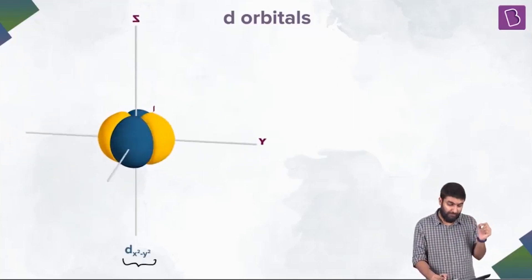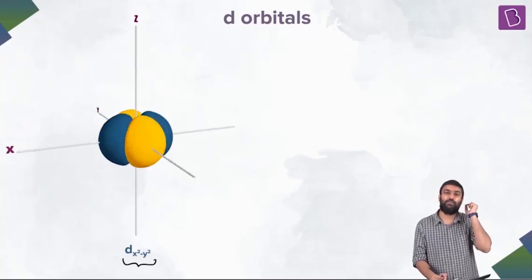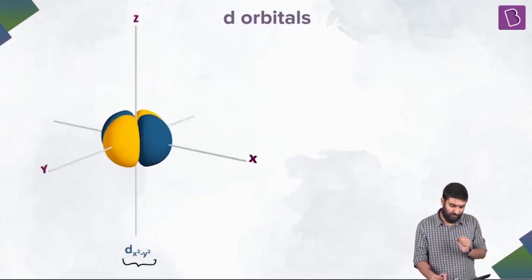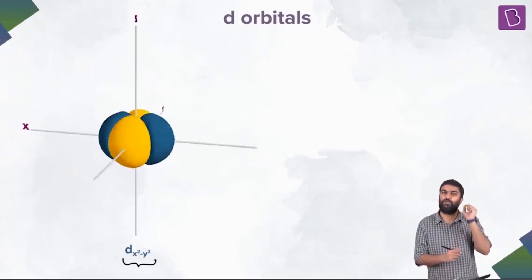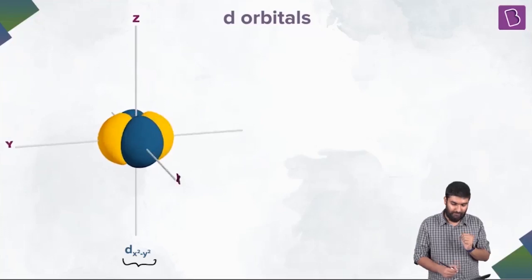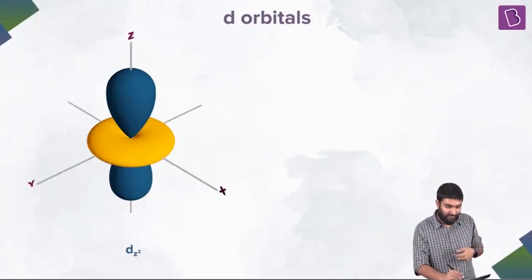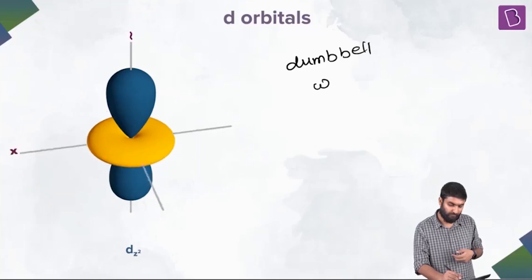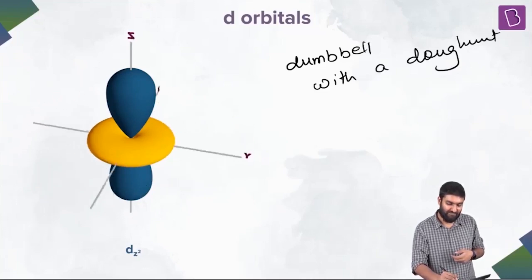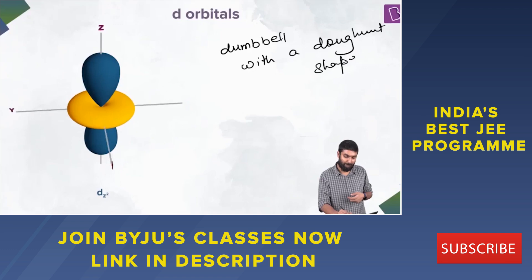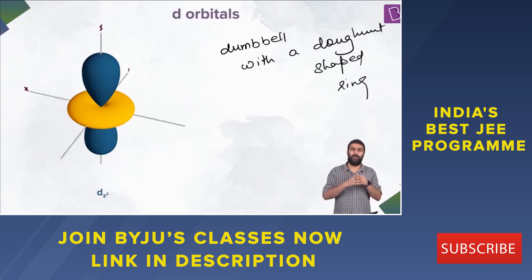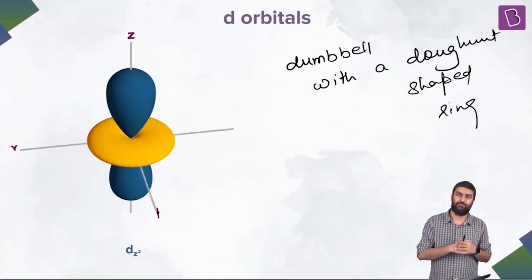And this is the most craziest one. This is also called as a single dumbbell with a donut-shaped ring around it. dz squared.